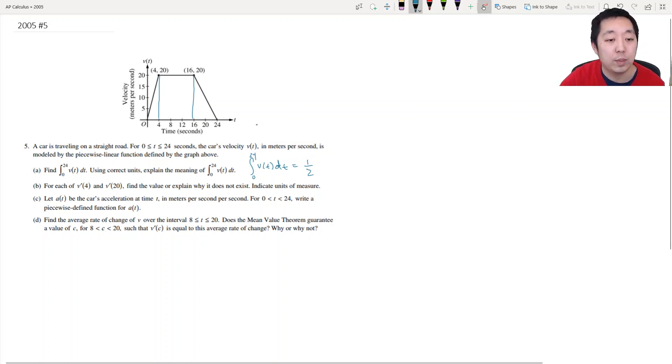Okay, this base is 24 plus this width that goes from 4 to 16, so that's 12, and then the height is 20. This is 36 times one half of 20, which is 10, so it's 360. Now the units of this: because of meters per second and this is seconds, I do meters per second times seconds and that's meters.